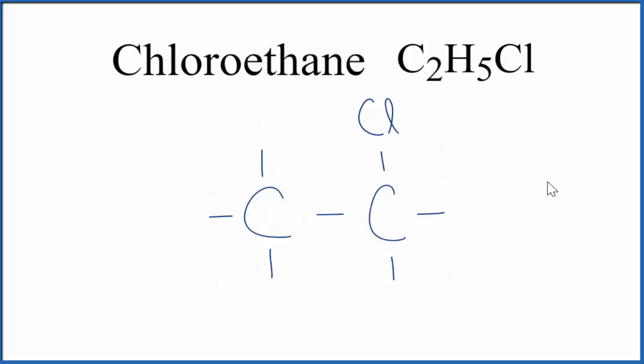This is Dr. B with the structural formula for chloroethane, C2H5Cl. Thanks for watching.